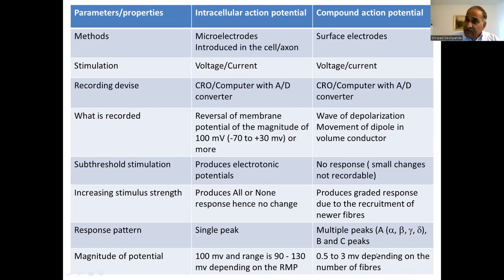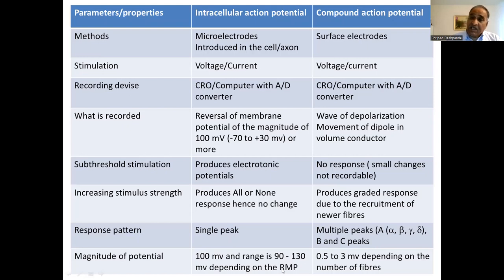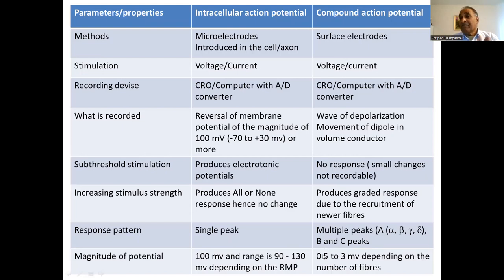In ECG, because of the synchronized activity of cardiac muscle, you get a 1 millivolt R-wave peak — the ventricular muscle mass is large. In case of EEG, you get values in microvolts — about 0.1 microvolts. So 0.5 to 3 millivolts is for the mixed nerve. For other extracellular potentials, the range may be from microvolts to millivolts.